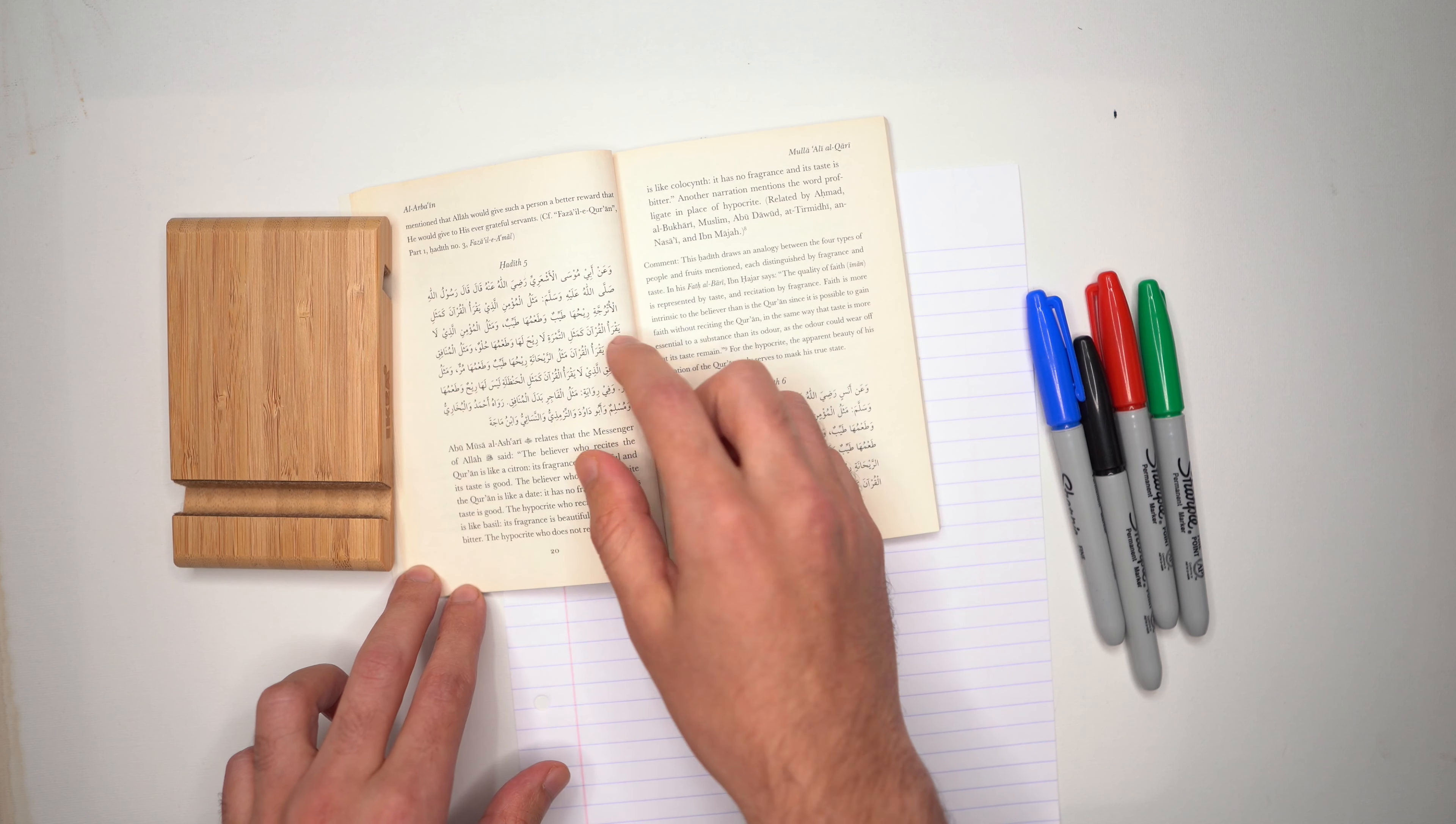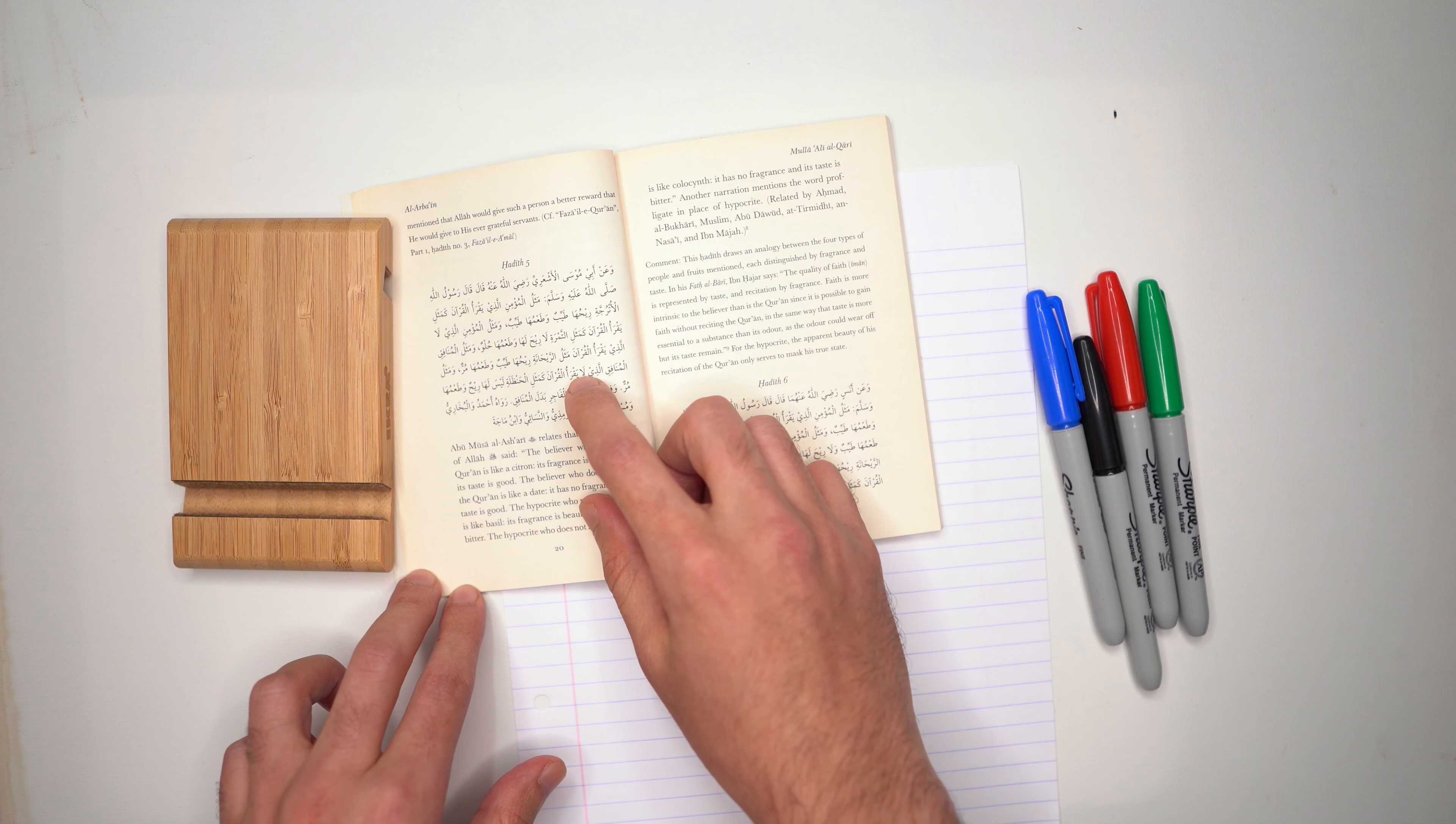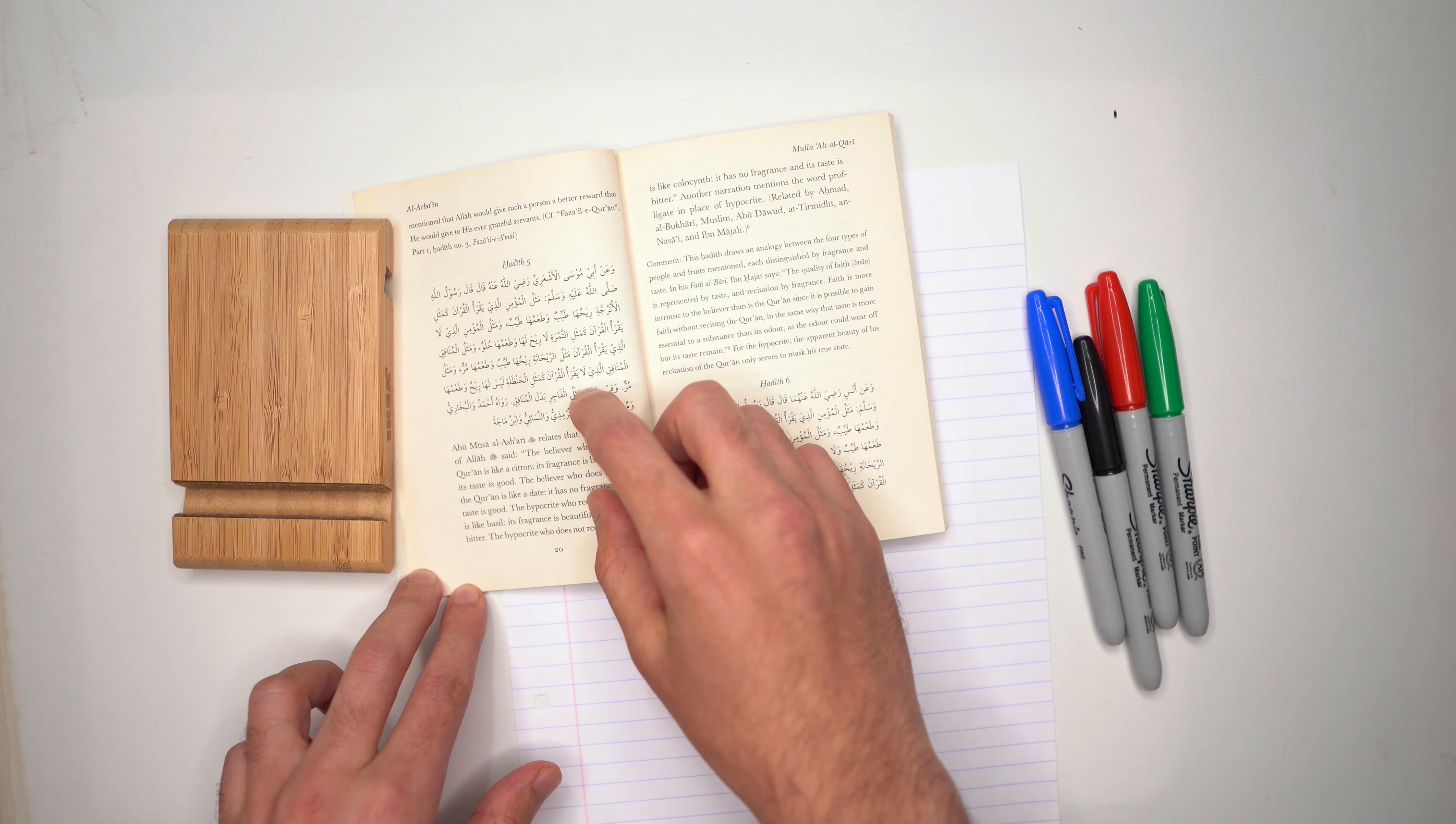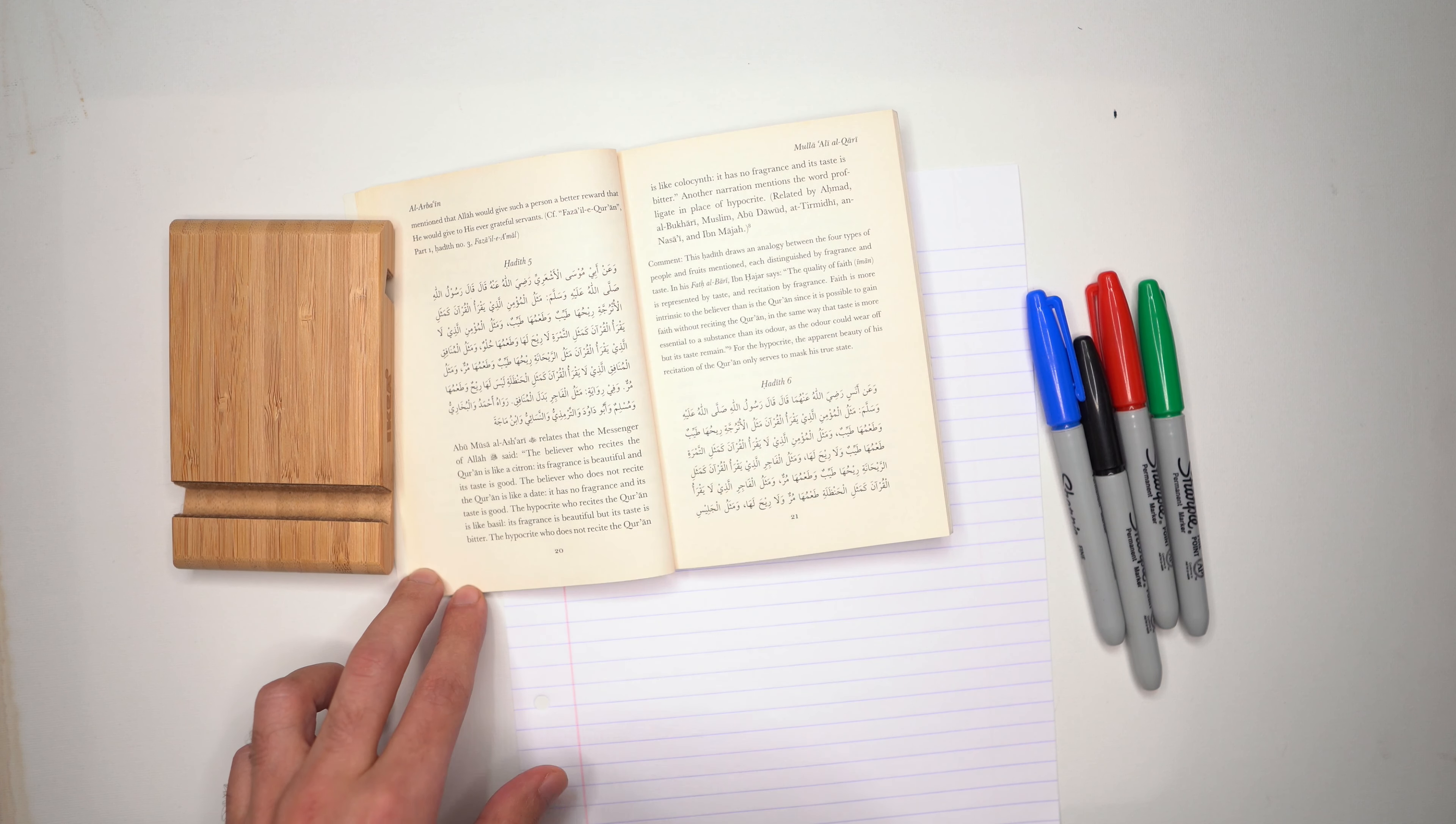The example of a hypocrite who reads the Qur'an is like the rayhana flower - its smell is fragrant but its taste is bitter. The example of a hypocrite who doesn't read the Qur'an is like the example of a hanzal plant - has no fragrance and its taste is bitter. In one narration, the wording of 'example of an open disobedient person' appears in place of hypocrite. Ahmad, Bukhari, Muslim, and all of these have narrated it.